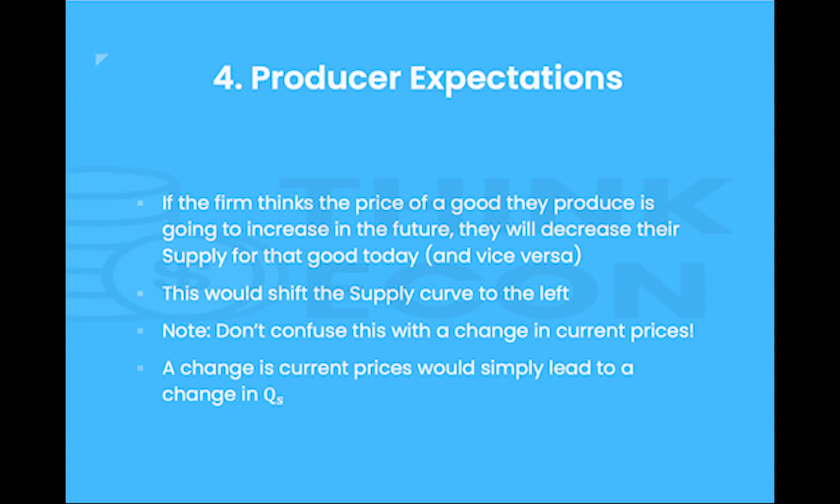Fourth, we have producer expectations. If a firm thinks that the price of the good they produce is going to increase in the future, they will decrease their supply for the good today. That way they will sell less at today's lower price and sell more at that future higher price, thereby increasing profits. The same is true for the reverse scenario: if firms expect the price of a good to decrease in the future, they will increase current supply in an attempt to capitalize by selling at a higher price today and making more in profits. It is important that you do not confuse this with a change in current prices — this is just expectation. A change in current prices would simply lead to a change in quantity supplied and a movement along the curve.